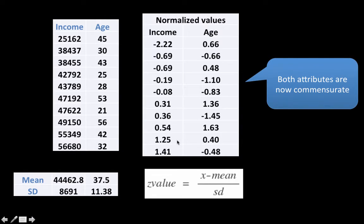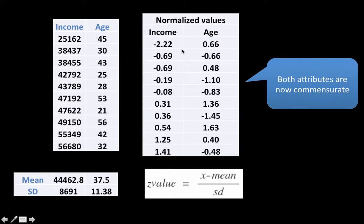And you have a bunch of other values here. For ages, the mean is 37.5 and the standard deviation is 11. So 45 minus 37 is roughly 8 divided by 11, so this value is 0.66 standard deviations above the mean, and this value is 0.48 standard deviations below the mean. The value 21 is 1.45 standard deviations below the mean. So now the range of both attributes is sort of related — quite close to each other — and if you compute distances based on this, no one attribute will be able to dominate distance calculations.